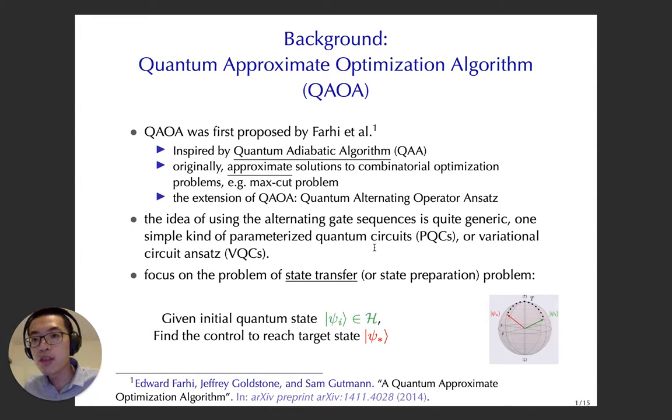First, about the background of quantum approximate optimization algorithms, or QAOA. It was first proposed by Farhi in 2014 and was inspired by the quantum adiabatic algorithms. Originally, it was to get approximate solutions to the combinatorial optimization problems, such as Max-Cut problem, and it can also be used as a quantum alternating operator ansatz. The variational circuit or parameterized quantum circuit are quite broad, and the QAOA is just one very specific and simple ansatz. In this talk, we mainly focus on the problem of state transfer: given an initial state, you want to find the control to reach the target state.